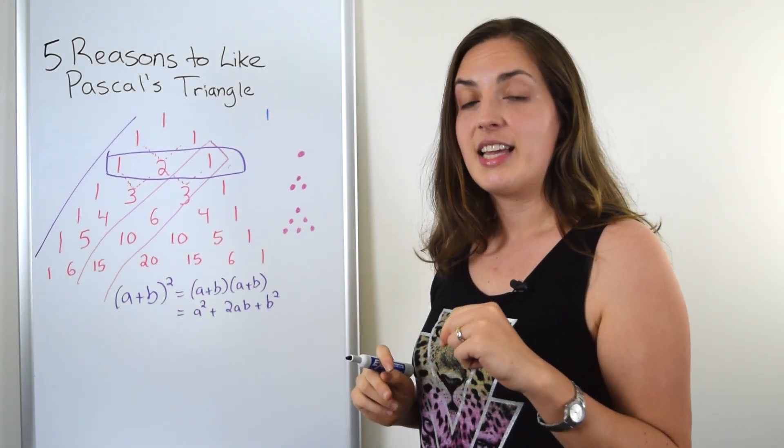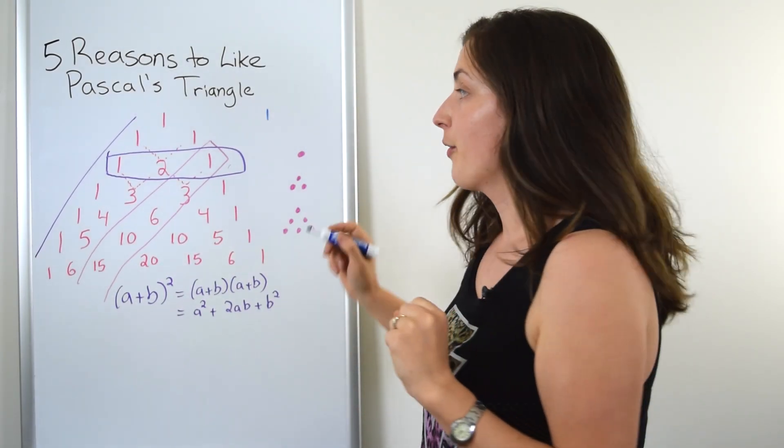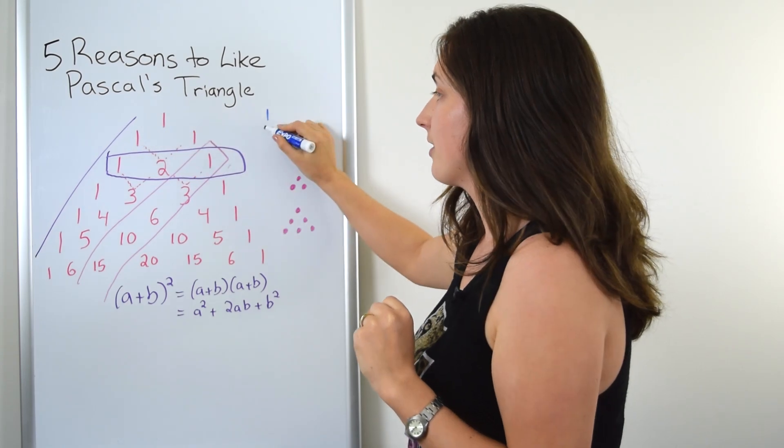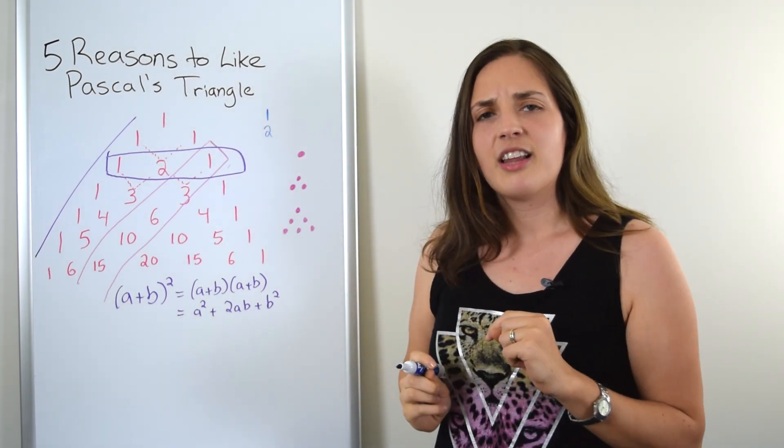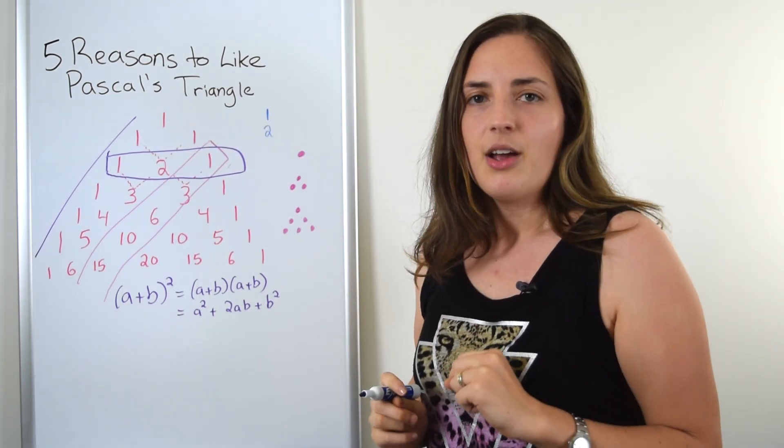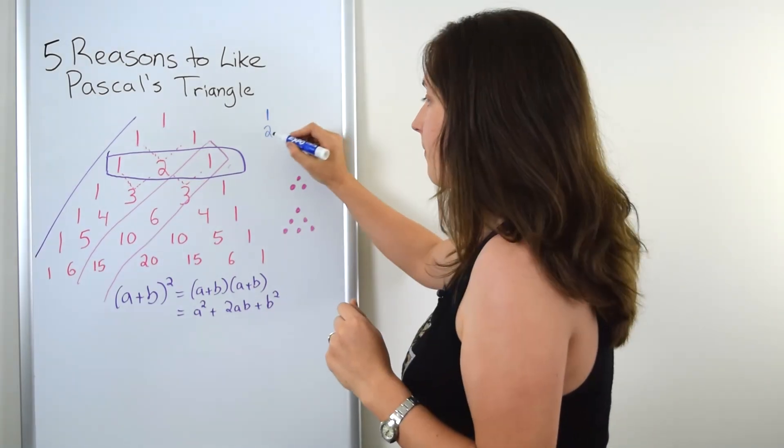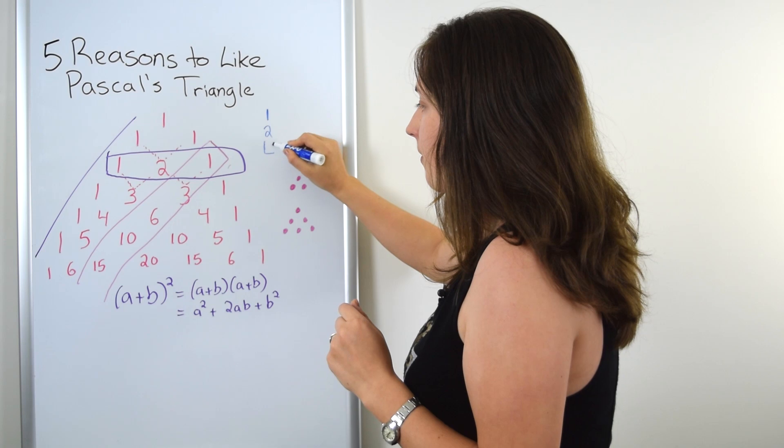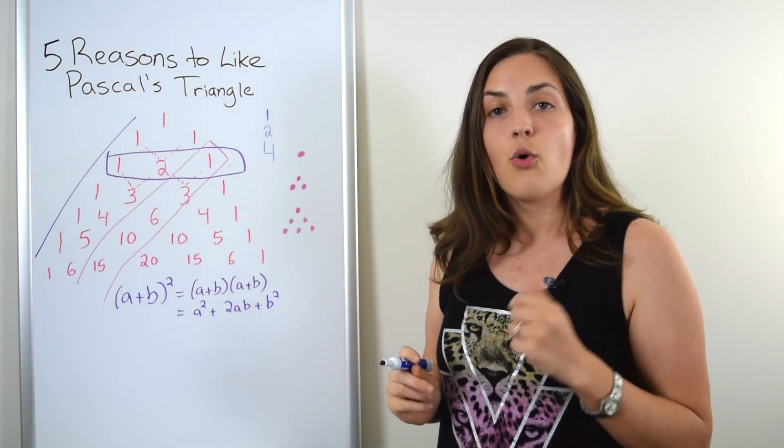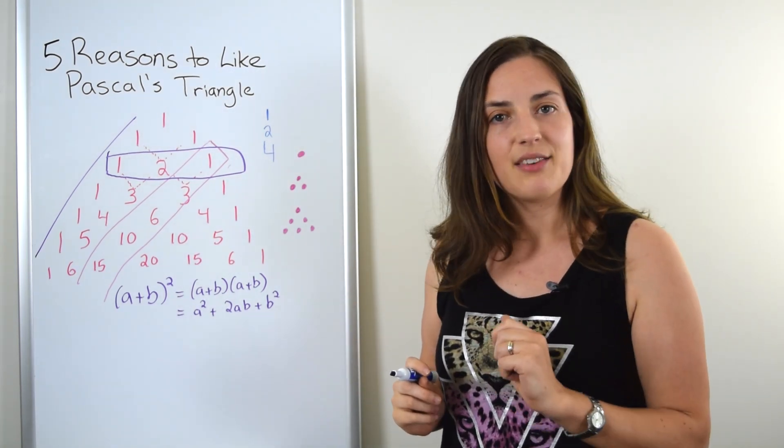If I sum up the entries in the next row, row one, what do I get? Well, I get one plus one, so that's two. It may not look like much right now, but keep going. What happens when you sum up the next row? You'll see that you get one plus two plus one, which is four. And again, one plus three plus three plus one gives you eight.